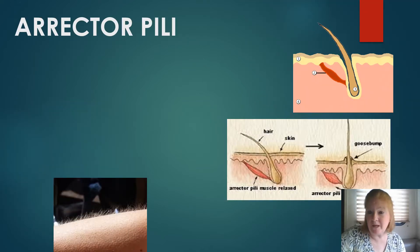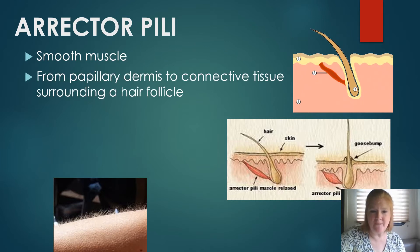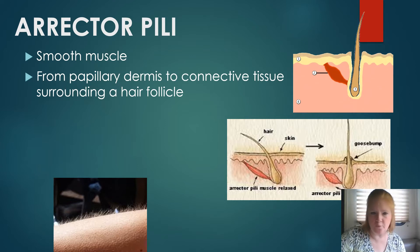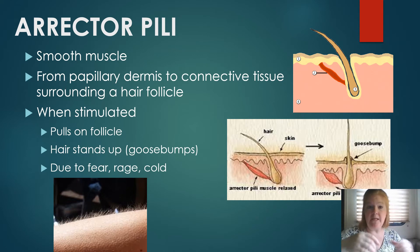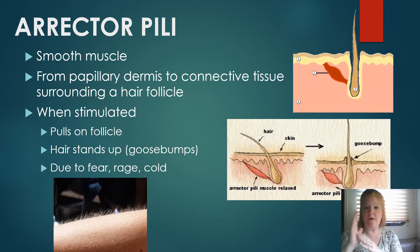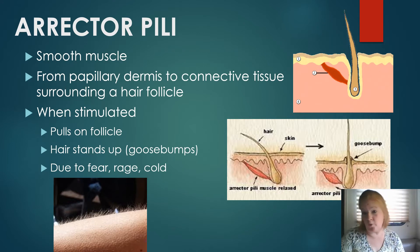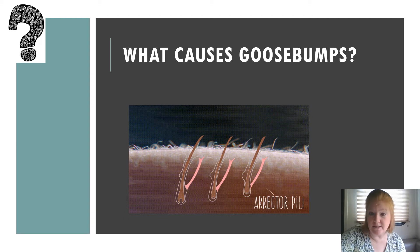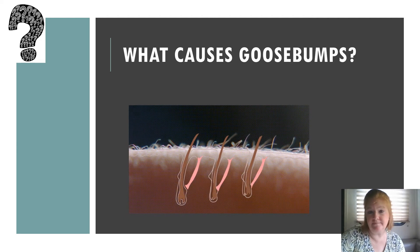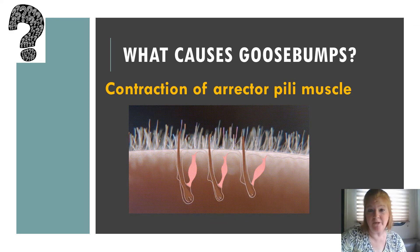The erector pili muscle is a smooth muscle that runs from the papillary dermis to the connective tissue surrounding a hair follicle. When it's stimulated, it pulls on the follicle and the hair stands up — goosebumps. This can be due to fear, rage, cold, or some other emotions. Goosebumps are caused by the contraction of that erector pili muscle.